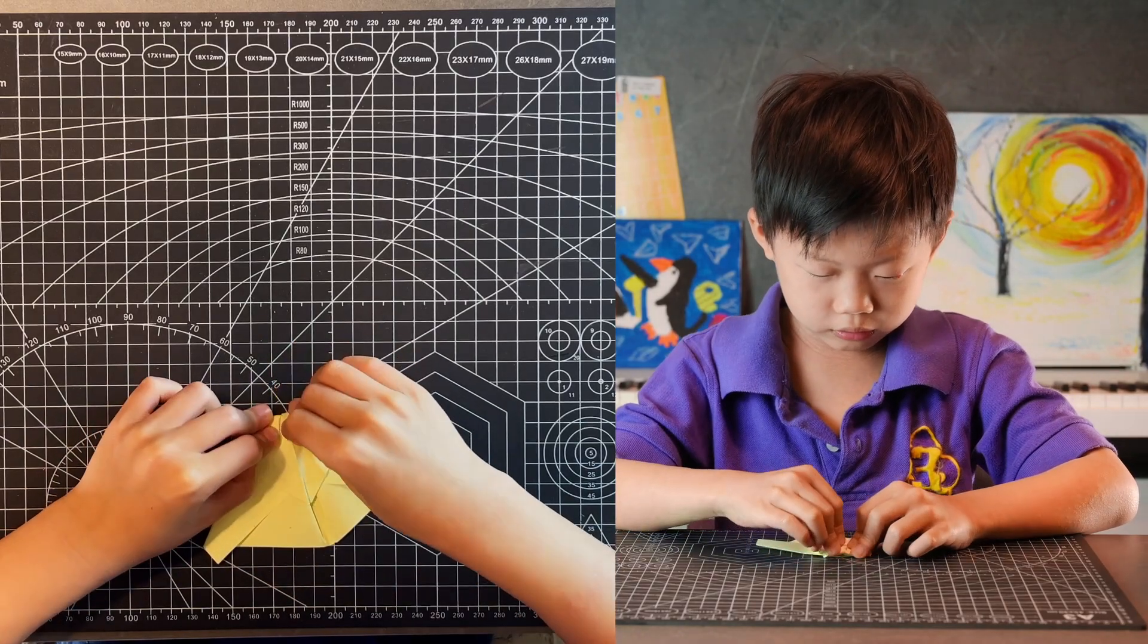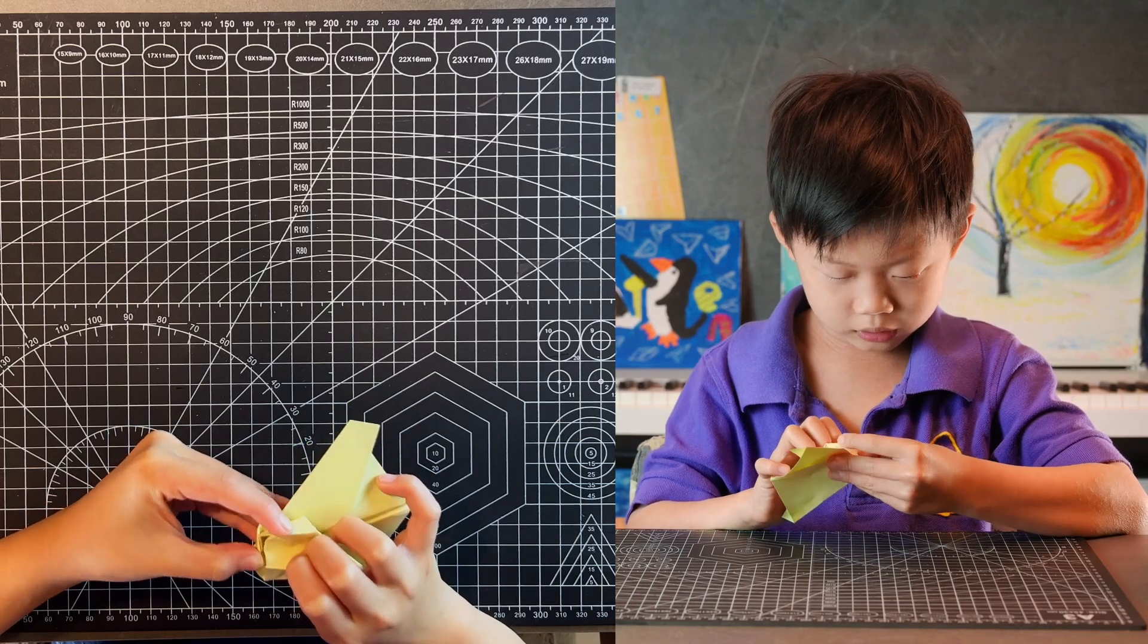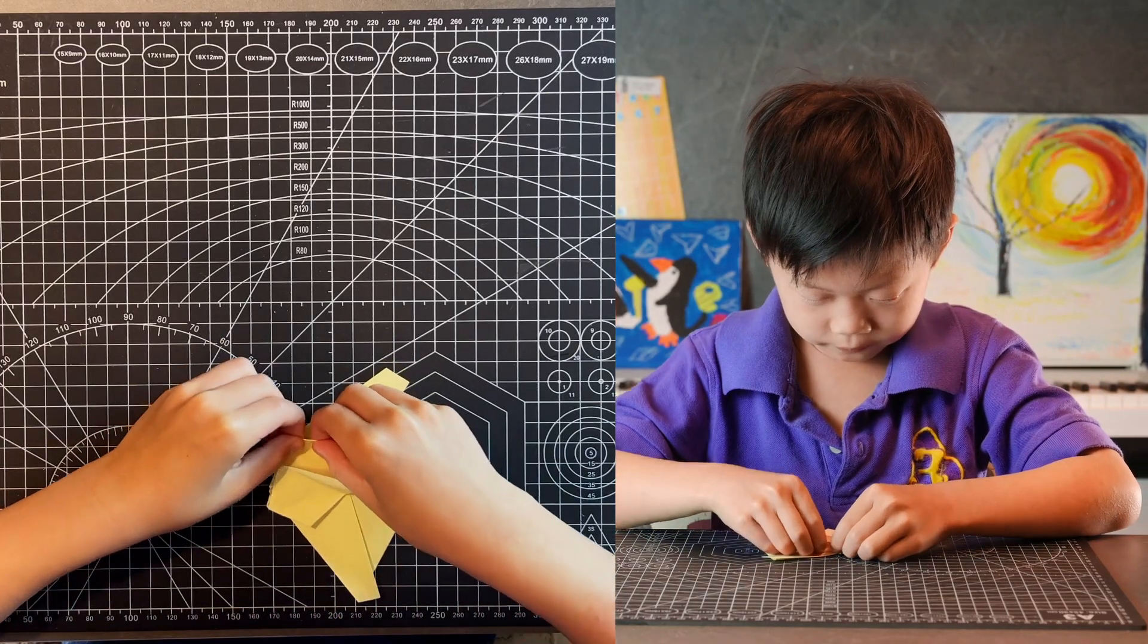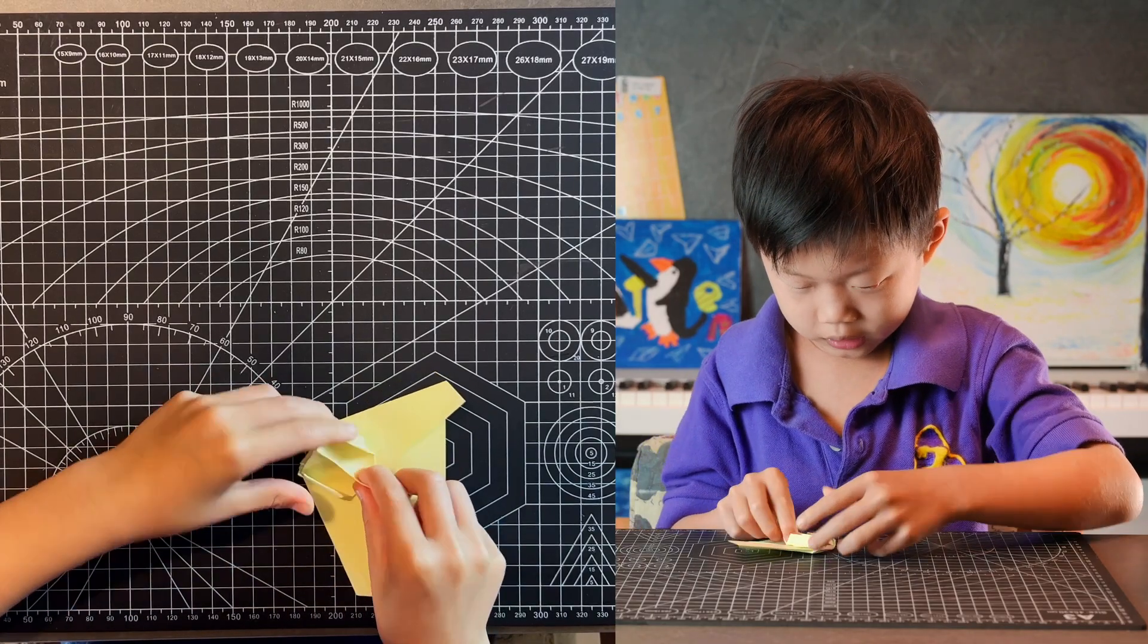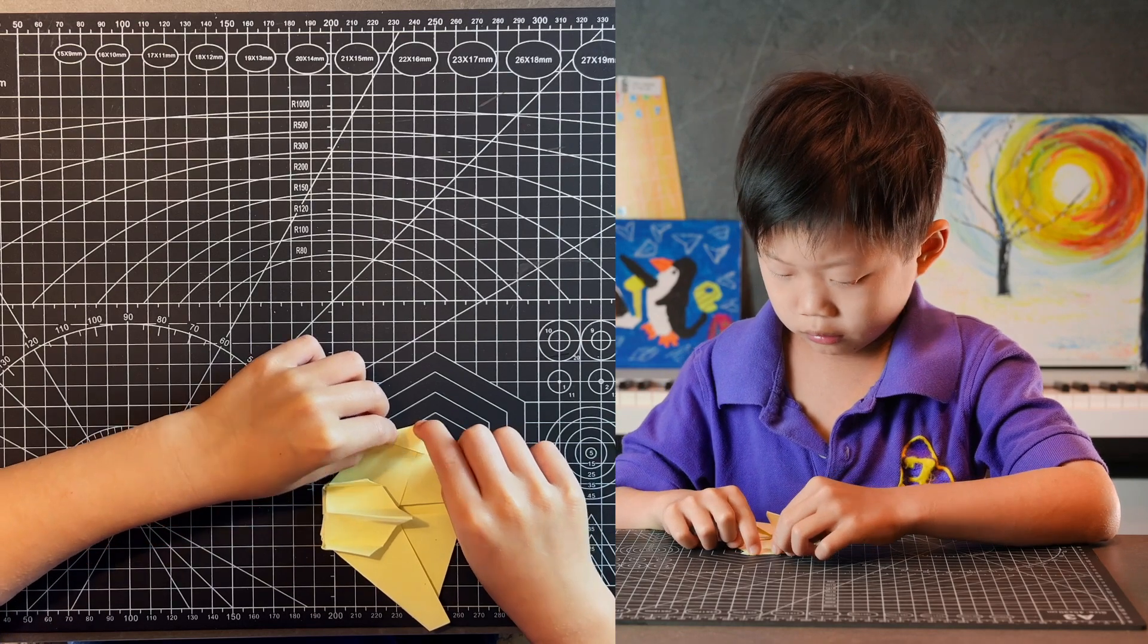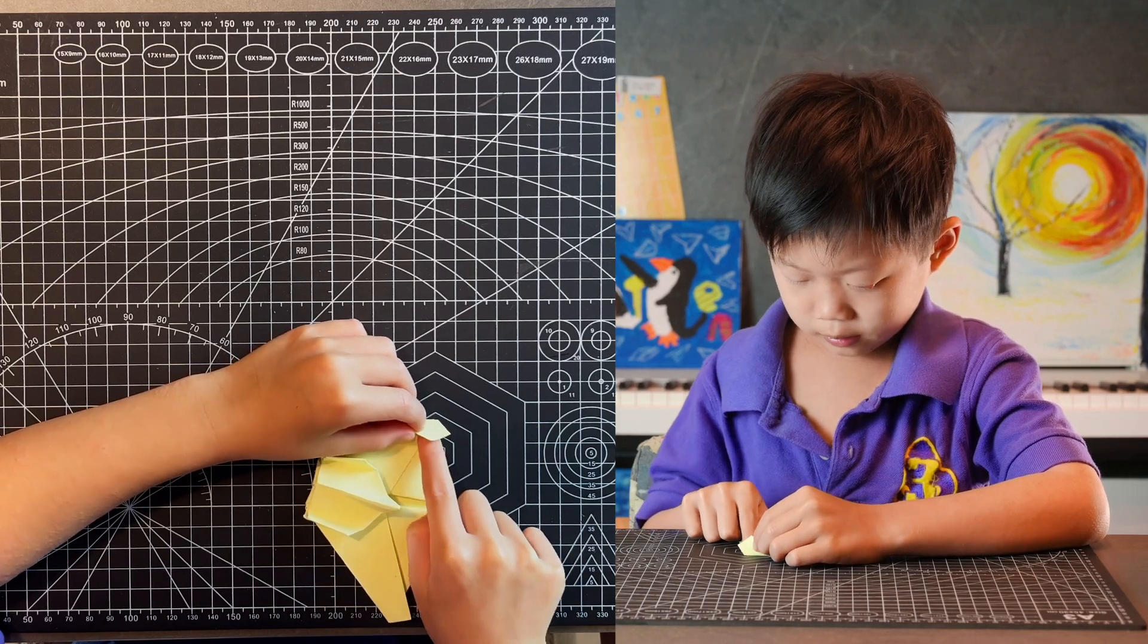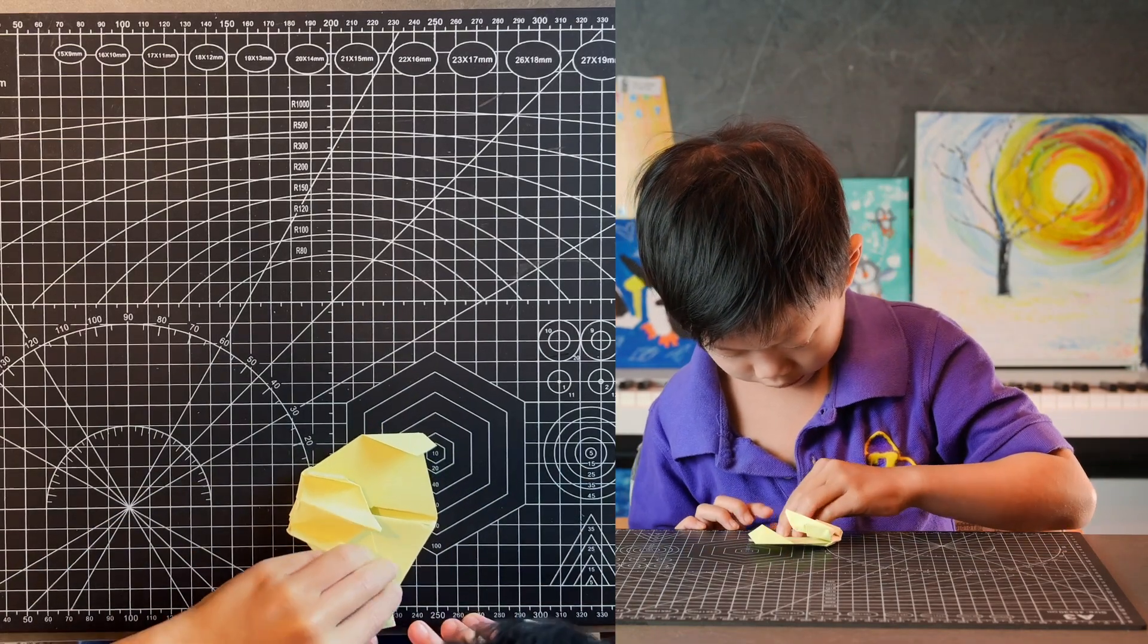Fold the prongs down and then you can just tuck them in. And then fold from this point to somewhere there. To adjust the angle, this point should be in the middle of this edge and this edge. And then do the same thing on your other side.